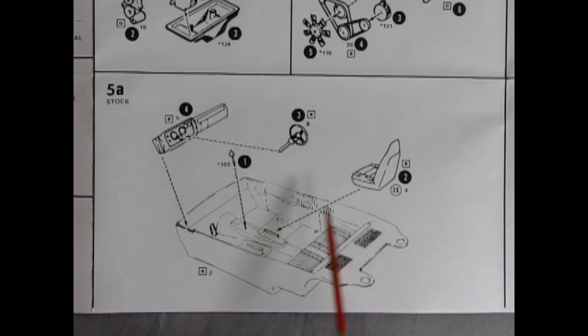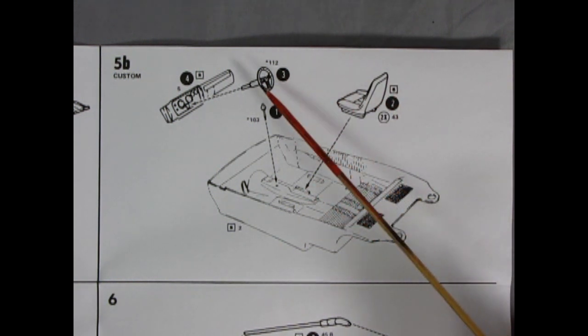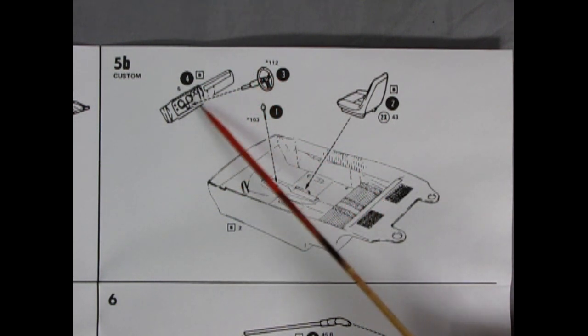Step five shows our interior tub going together. Here we have the two bucket seats going in place as well as our steering wheel, the chrome shifter and our dashboard. Image five B shows our custom interior going together with alternate bucket seats going into the tub with our shift lever as well as our chrome plated steering wheel this time around and our dashboard.